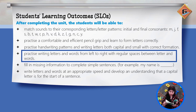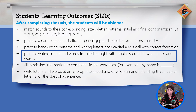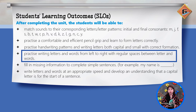Practice writing letters and words from left to right, with regular spaces between letters and words. You should know that whenever we write English, it is always written left to right, and when we write two words there is one space between them.